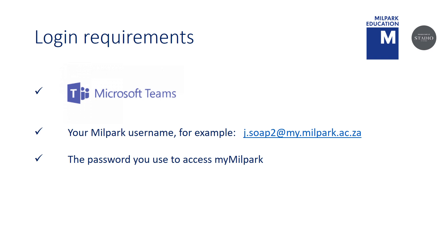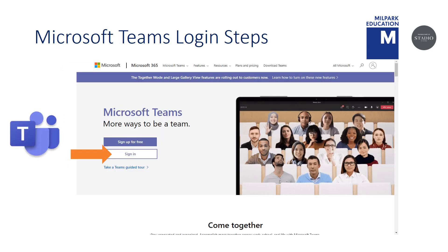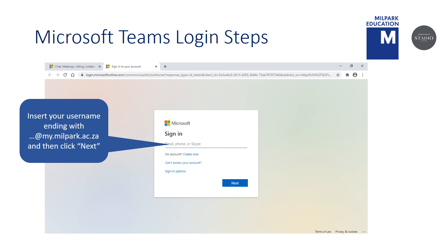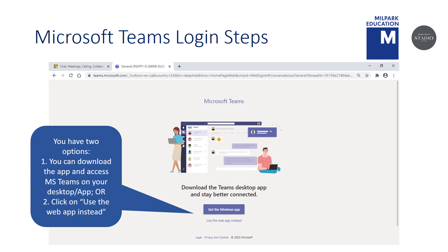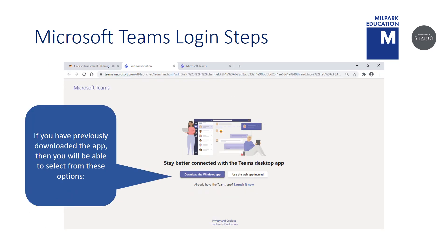So go ahead, click on Microsoft Teams using your Millpark username and password. Once you've opened the Microsoft Teams page, you will now be able to sign in. Using your Millpark email, click Next. Then enter your password before clicking Sign In. Here you have two options: you can download the app and access Microsoft Teams on the desktop or app, or click Use the Web App instead. If you have previously downloaded the app, then you'll be able to select from these two options.